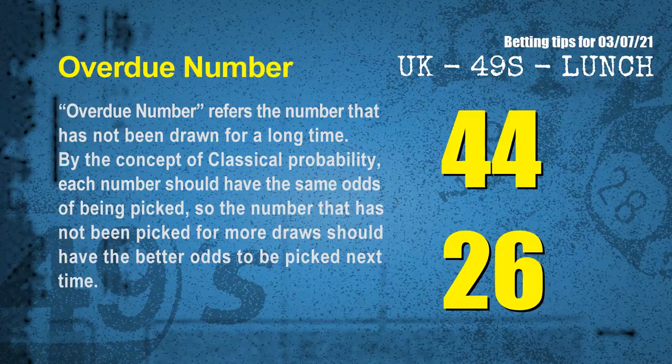The final information is overdue numbers. An overdue number is one that has not been drawn for a long time. By classical probability, a number not picked for more draws should have better odds to be picked next time. After counting thousands of results, the most overdue two numbers are 44 and 26.